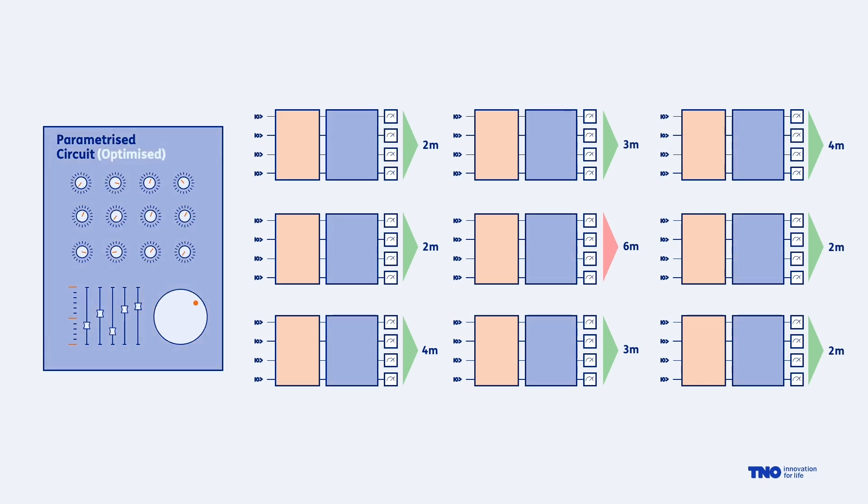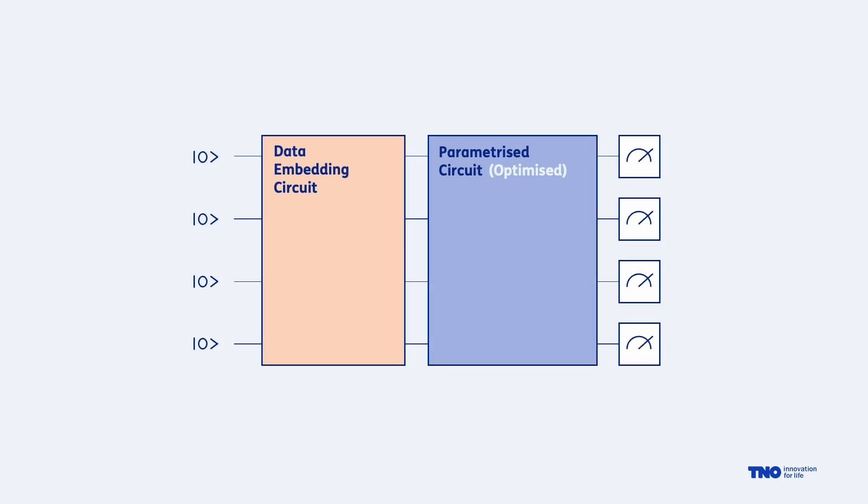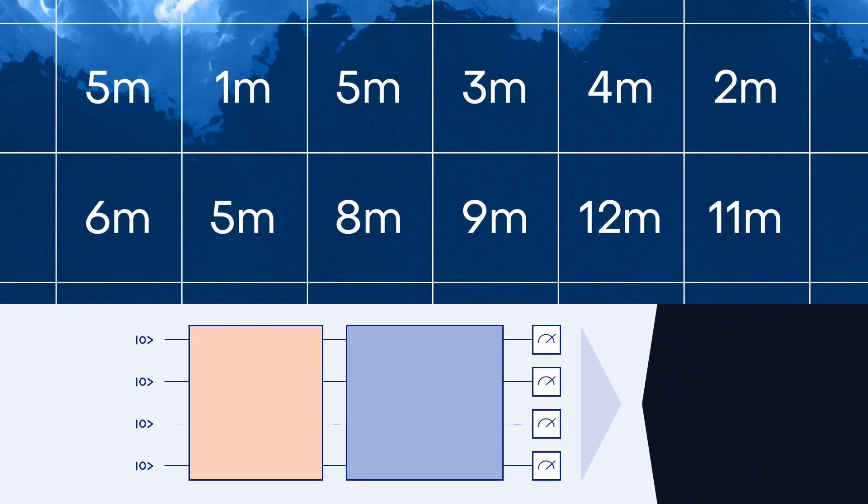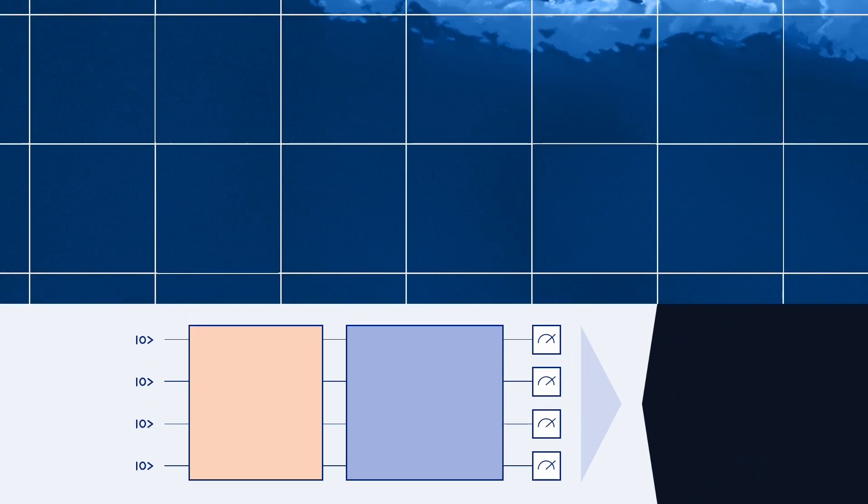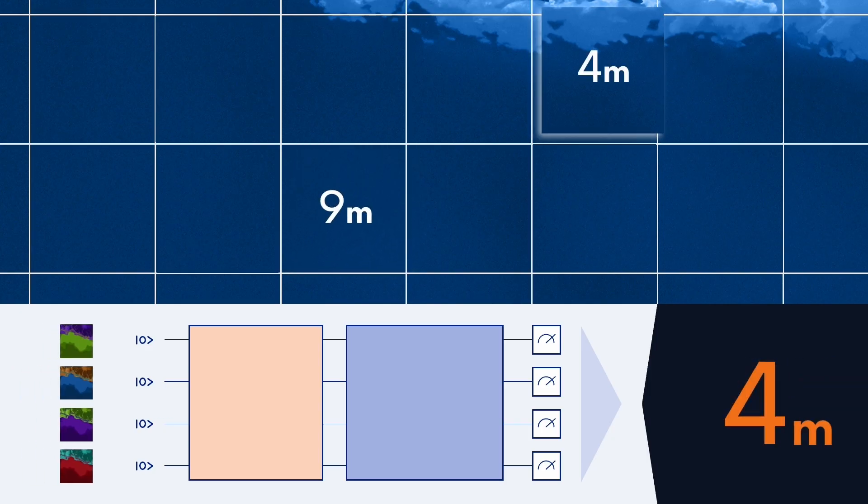Once we are happy with the parameters we have a quantum circuit that can relate a pixel to the water depth. So we can again move to an area where we don't know the depth and use our quantum circuit to predict it.